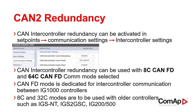CAN intercontroller redundancy can be used with 8C CAN FD or 64C CAN FD COM mode selected. CAN FD mode is dedicated for intercontroller communication between IG1000 controllers. The other two options, 8C and 32C modes, are to be used with older controllers such as IGSNT, IGS GSC, IG200, or IG500.